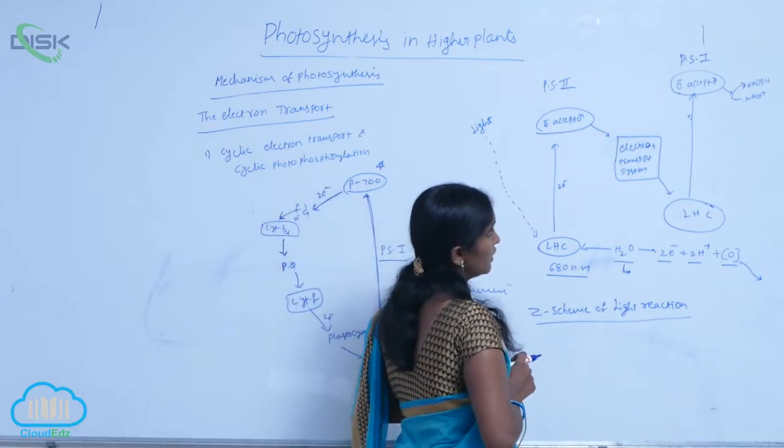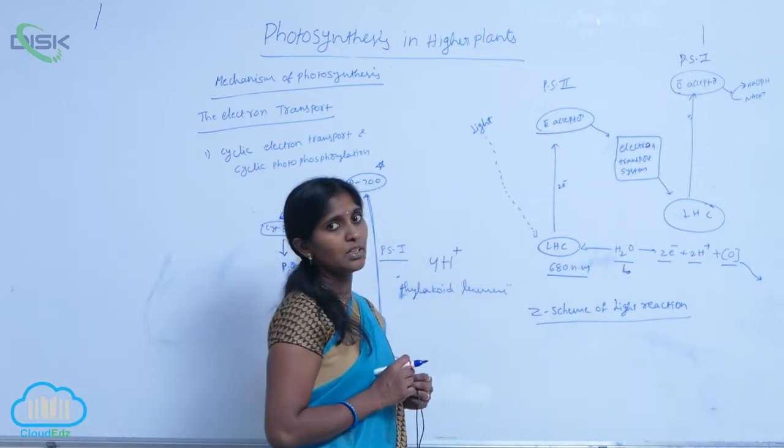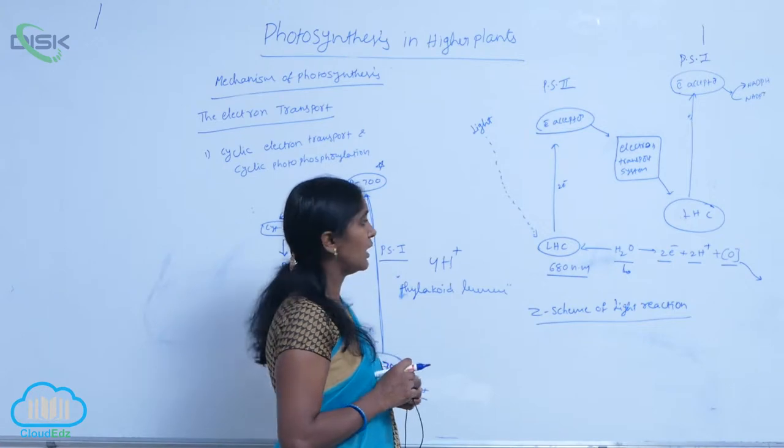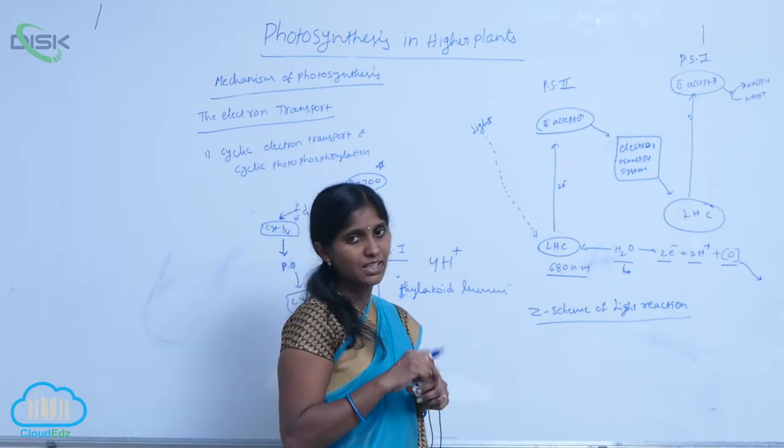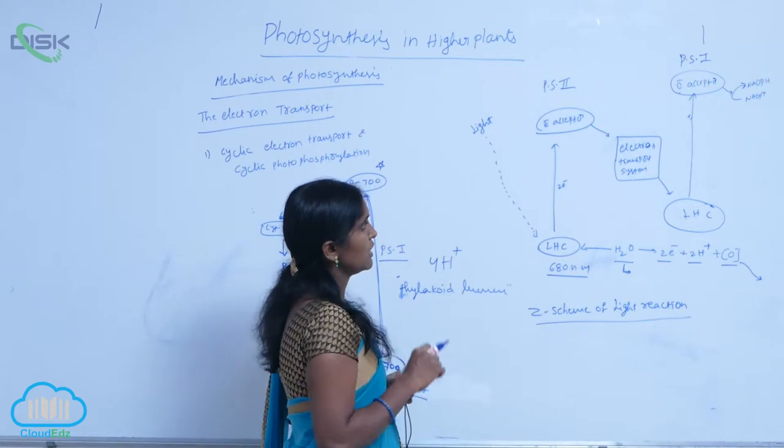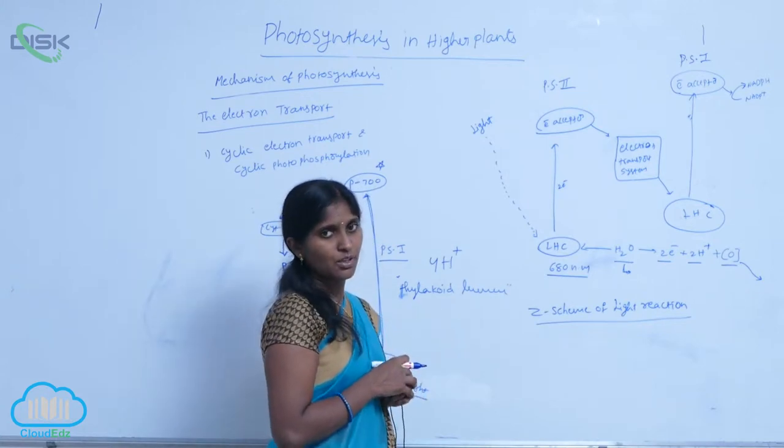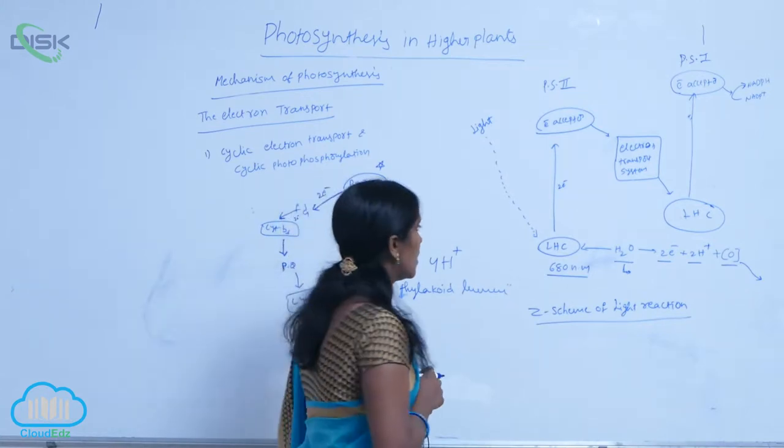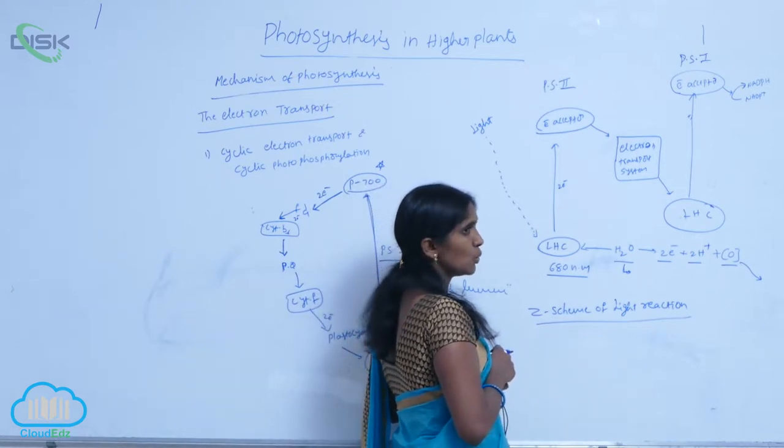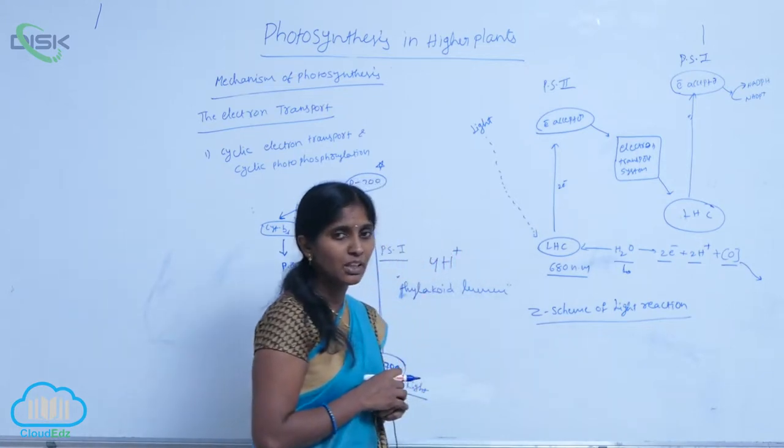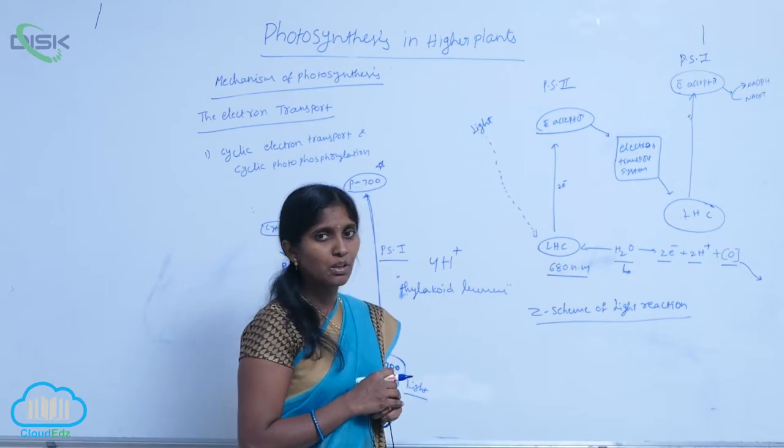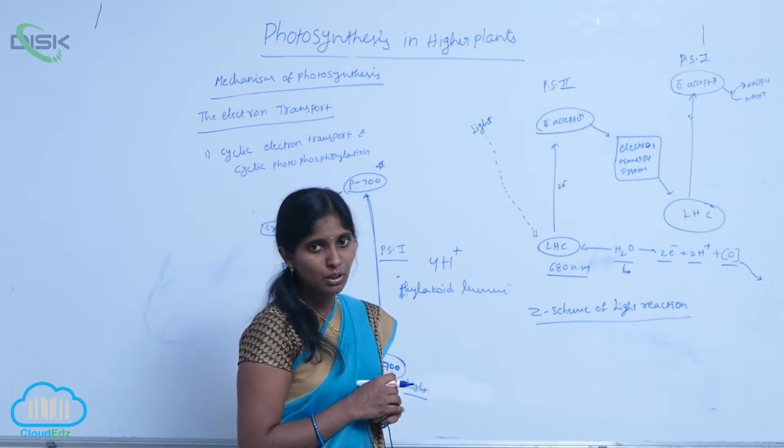When you see the shape of the electron transportation indicated as Z, hence the scheme is called the Z scheme. During the Z scheme, the oxidized PS2 gets reduced by taking electrons which come from the splitting of the water molecule.